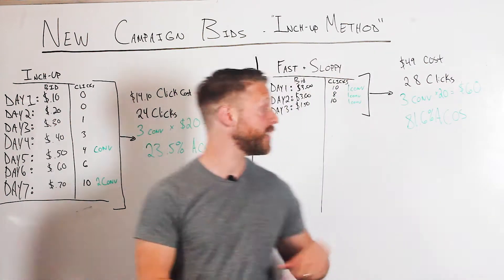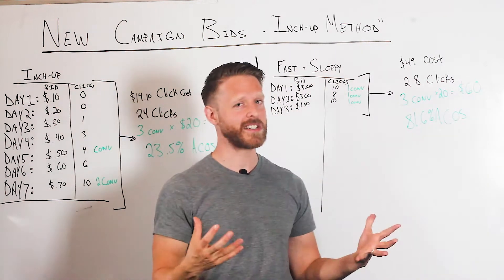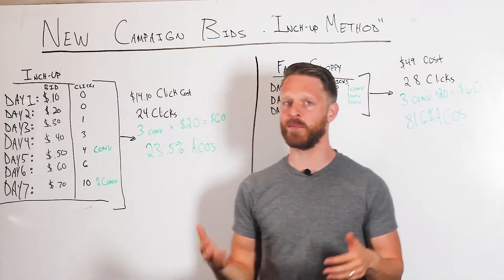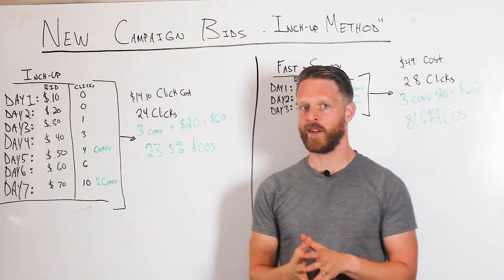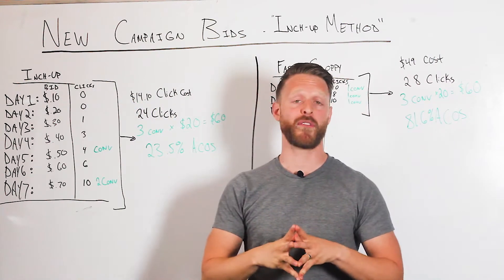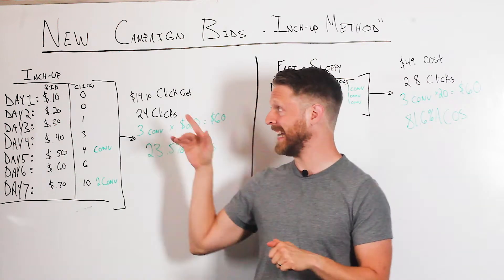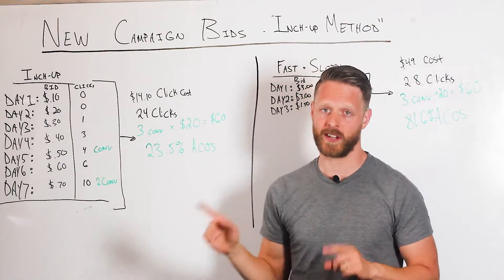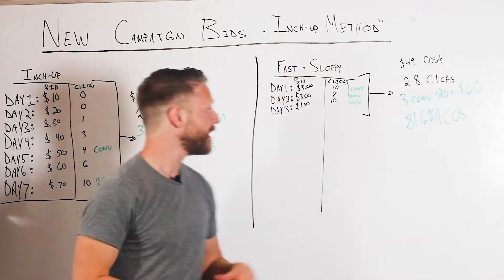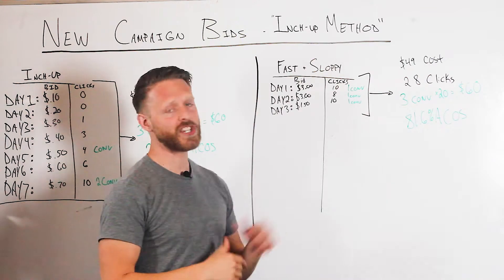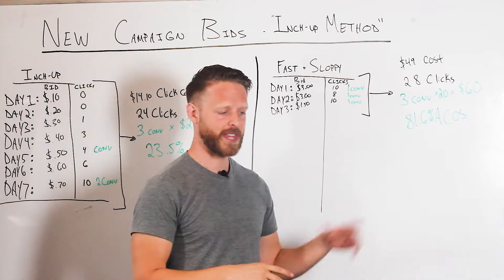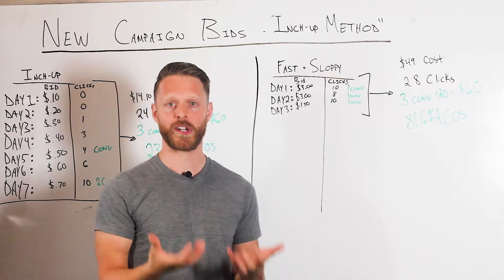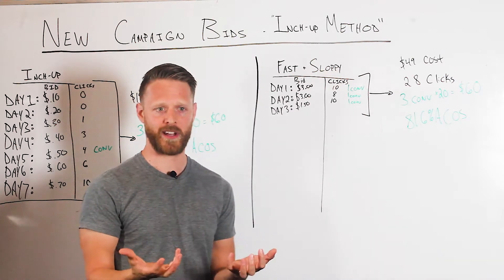One called 'fast and sloppy' and the other one called the 'inch up method.' The strategy that I prefer by far is the inch up method, which we're going to talk about in just a couple seconds. So let's talk about fast and sloppy. The mindset of someone who's launching a new keyword on Amazon is...